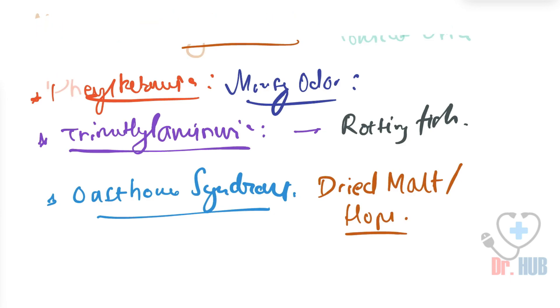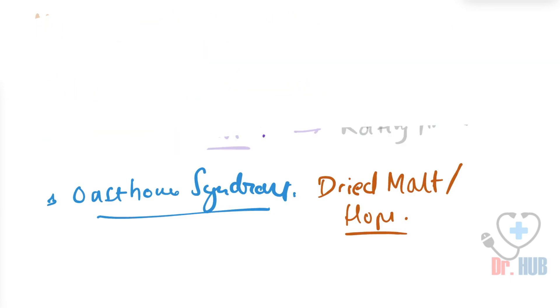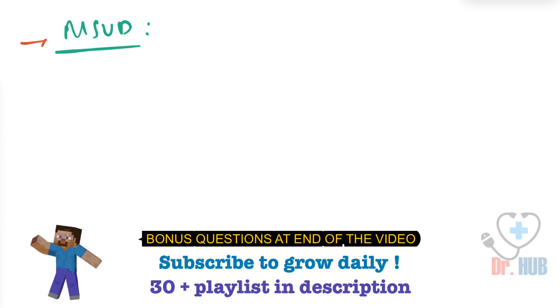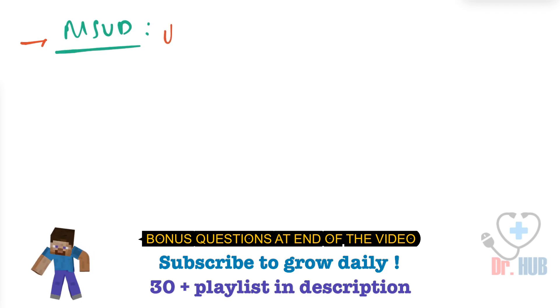Now answering our questions. The first question was: what is the odor in maple syrup urine disease? As the name suggests, the odor is of maple syrup.